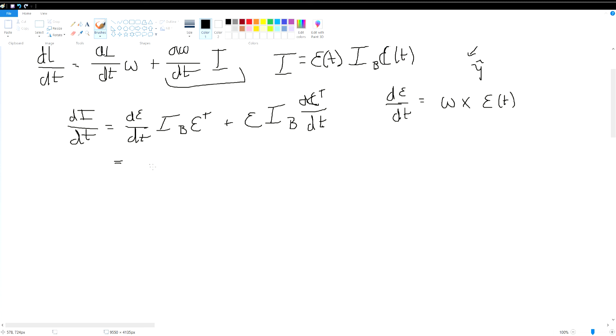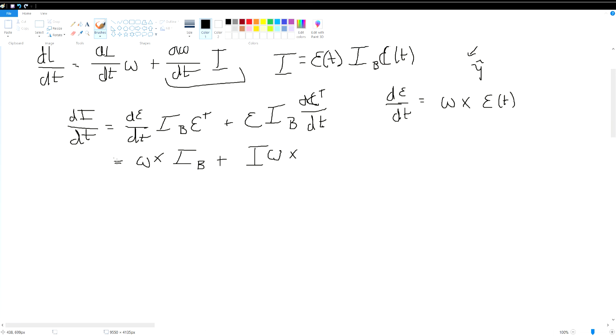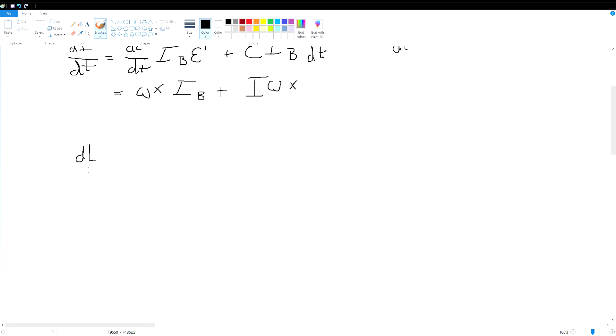So we can plug that back in. So what we end up with is omega cross with I_b. Remember, these rotations will actually drop out. Omega cross with the body here plus I_b omega cross.